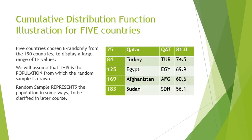The graph obtained from this is called the distribution of the random variable, because the height of the graph shows where the random variable is likely to be. The larger the bar, the more likely the random variable is to be in that region. A theoretical tool of great importance is called the cumulative distribution function, or CDF.